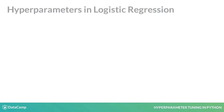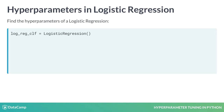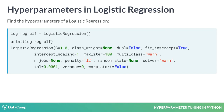What about our logistic regression model? What are the hyperparameters for that? We follow the same steps — firstly, we create a logistic regression estimator, then we print it out. We can see there are fewer hyperparameters for this model than for the random forest.